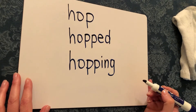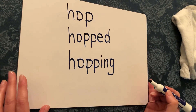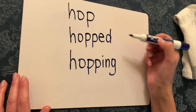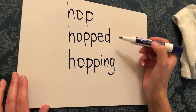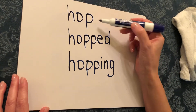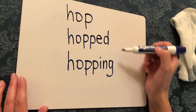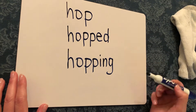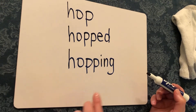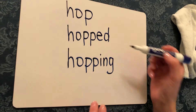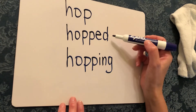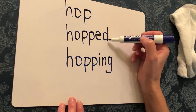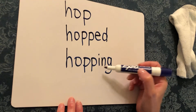So with this rule, we're doubling our consonant and adding our suffix. We changed the word hop to hopped, and then to hopping. You always double your consonant, then add the appropriate suffix — in this case, ED and then ING.